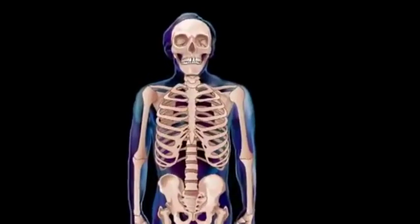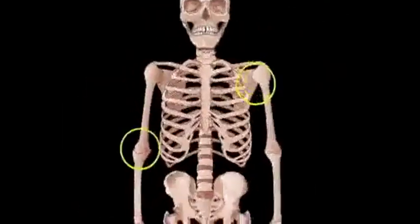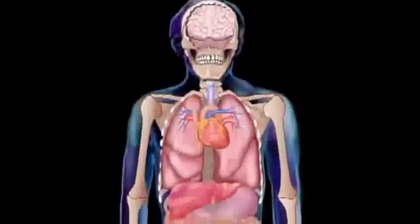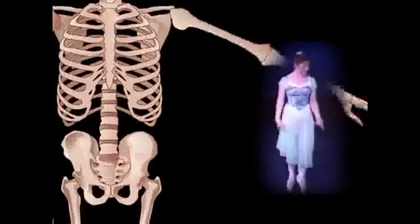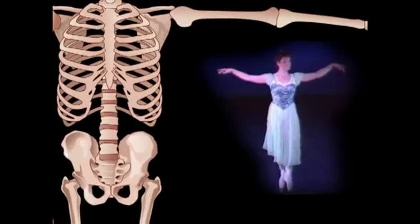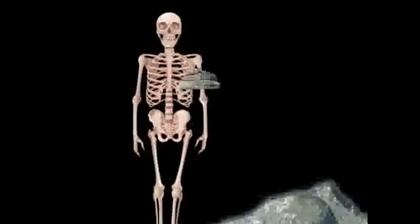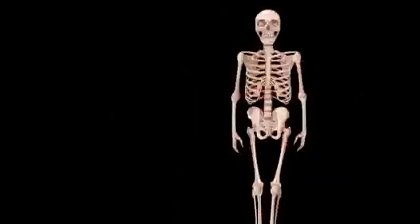The skeletal system includes all the bones of the body, plus the joints where they attach to each other. Our skeleton protects our internal organs, provides a framework or scaffolding that allows us to stand upright and move, stores minerals that our body needs to function properly, and produces blood cells.